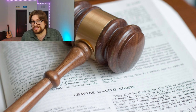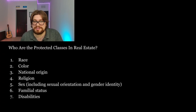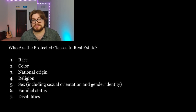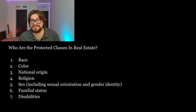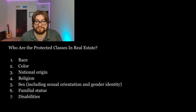The Fair Housing Act prohibits discrimination against protected classes in real estate. There are seven protected classes: race, color, religion, sex, familial status, and disabilities. Now, while the Fair Housing Act protects these groups, exceptions exist, such as the Mrs. Murphy exemption.